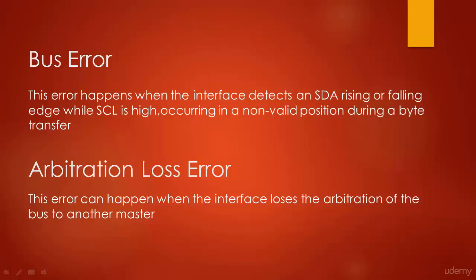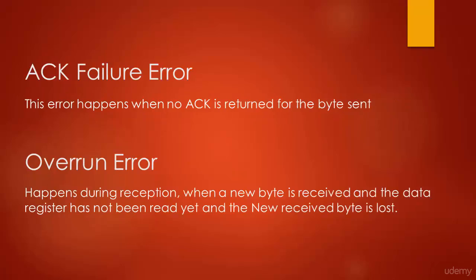Bus error happens when the interface detects an SDA rising or falling edge while the clock is high, occurring in a non-valid position during a byte transfer. Arbitration loss error can happen when the interface loses arbitration of the bus to another master. ACK failure error happens when no ACK is returned for the byte sent.